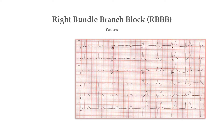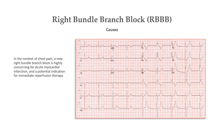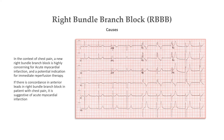Coming on to the causes of right bundle branch block: the right bundle branch is supplied by left anterior descending artery perforators in most patients, and thus occlusion of this branch may manifest as a new right bundle branch block with or without left anterior fascicular block. There is increasing literature suggesting that in the context of chest pain, a new right bundle branch block is highly concerning for acute myocardial infarction, and a potential indication for immediate reperfusion therapy. If there is concordance instead of discordance in anterior leads in a patient with chest pain and right bundle branch block, it is suggestive of acute myocardial infarction.